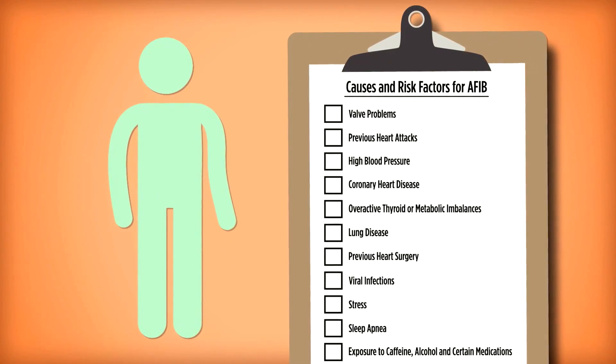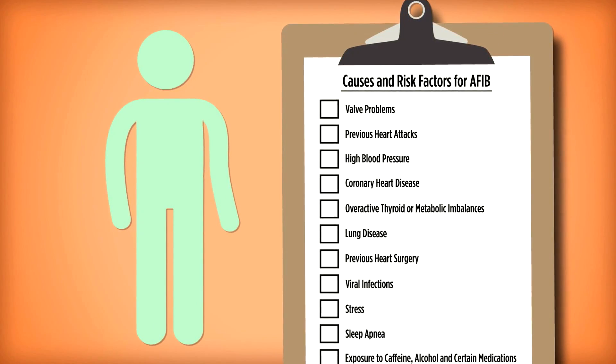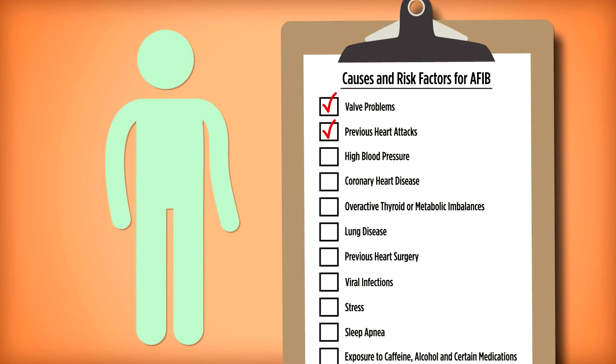There are a number of causes and risk factors for AFib including abnormalities in the heart's physical structure from things like valve problems and previous heart attacks.